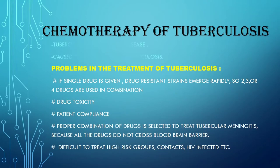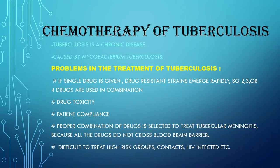Tuberculosis is a chronic disease and it is caused by Mycobacterium tuberculosis. Now here you can see some of the problems in the treatment of tuberculosis. Drug toxicity is the major problem that patients complain about. And if a single drug is given, drug resistant strains are going to emerge rapidly. So 2, 3, or 4 drugs are used in combination. Then a proper combination of drugs is selected to treat tubercular meningitis.